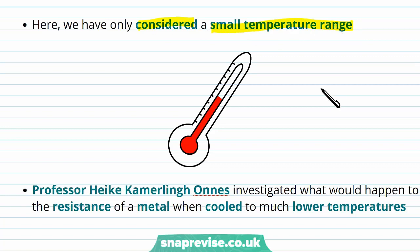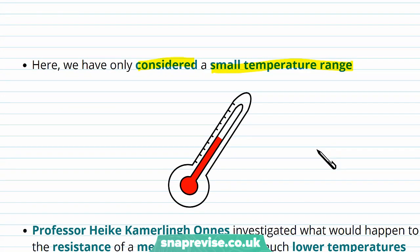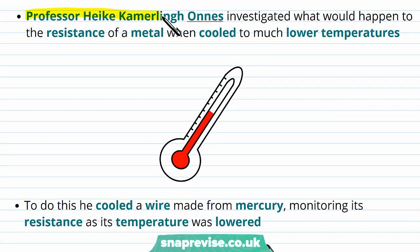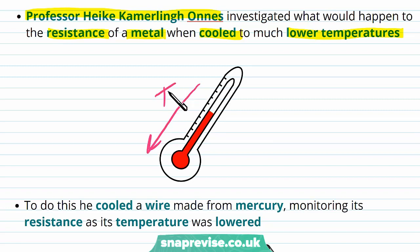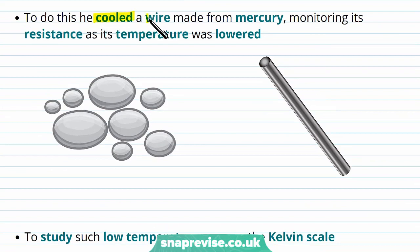However, we have only considered a small temperature range — between 0 and 80 degrees Celsius. Professor Heike Kamerlingh Onnes investigated what would happen to the resistance of a metal when cooled to much lower temperatures, below zero degrees, to see how extreme temperatures would affect the resistance of a metal conductor.